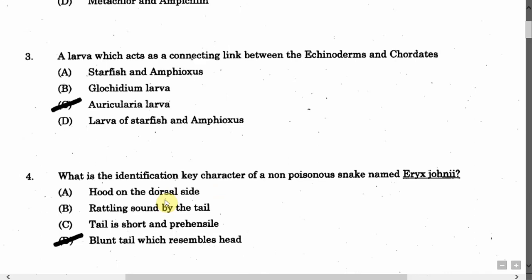The next question is: A larva which acts as a connecting link between the Echinoderms and Chordates. Option A: Starfish and Amphioxus. Option B: Glottidium larva. Option C: Auricularia larva. Option D: Larva of Starfish and Amphioxus. The correct answer is Option C, that is Auricularia larva.